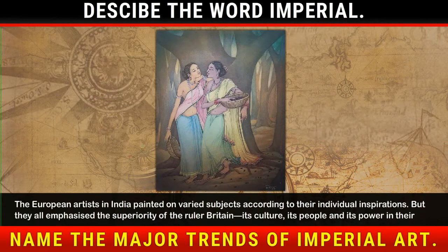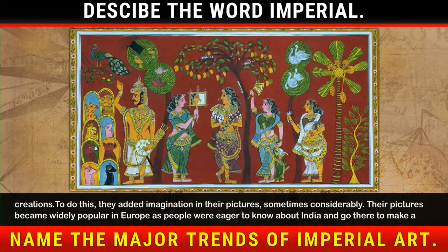The European artists in India painted on varied subjects according to their individual inspirations, but they all emphasized the superiority of the ruling Britain — its culture, its people, and its power in their creations. To do this, they added imagination in their pictures, sometimes considerably.